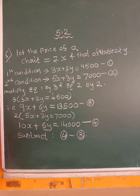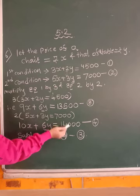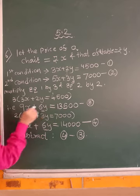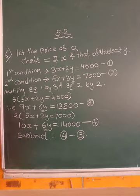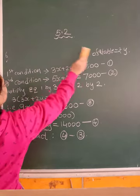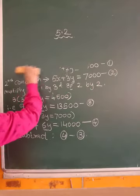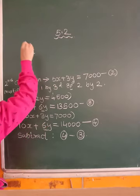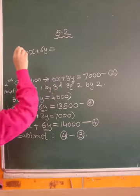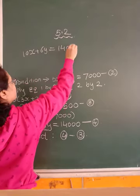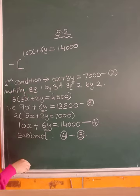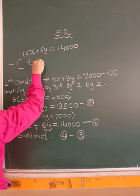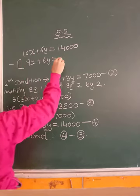Now, we want to eliminate either x or y. The coefficient we have equalized of y. So we need to eliminate y by subtracting. So we are subtracting equation 3 from equation 4. That means we are subtracting the third equation from the fourth equation.